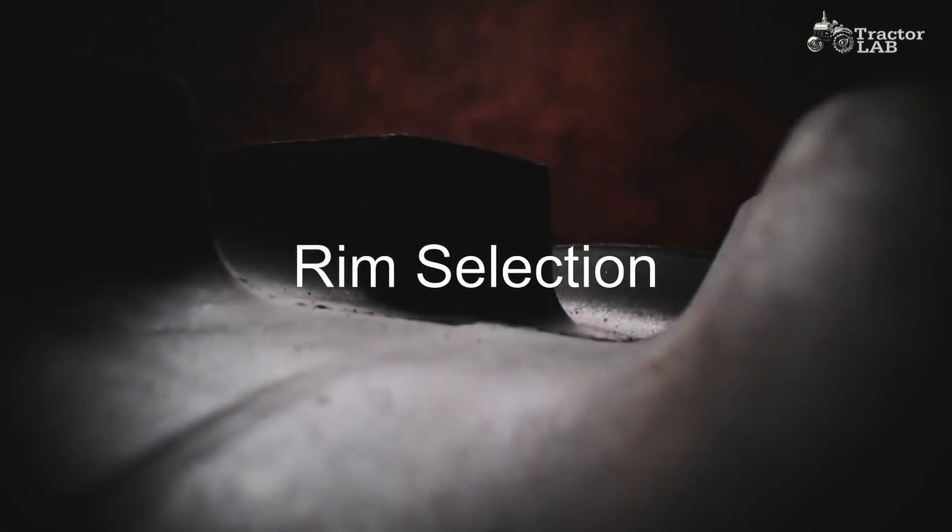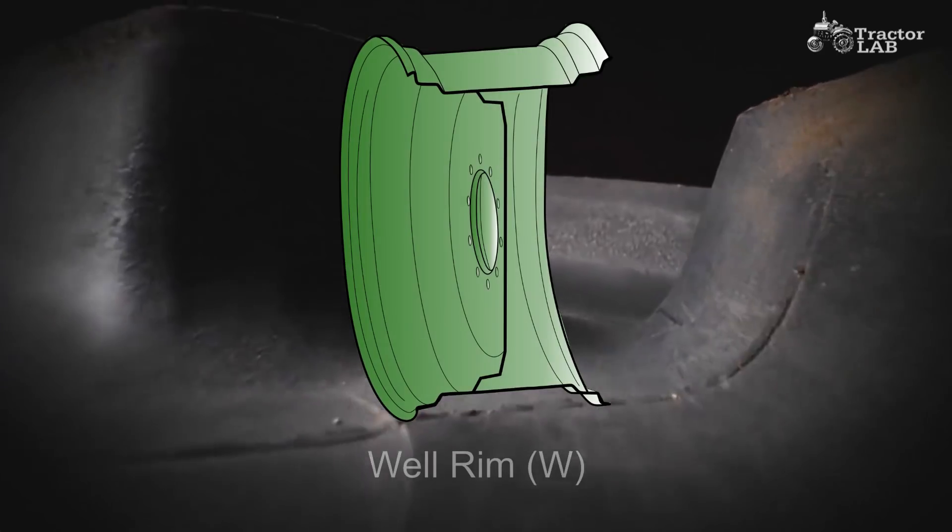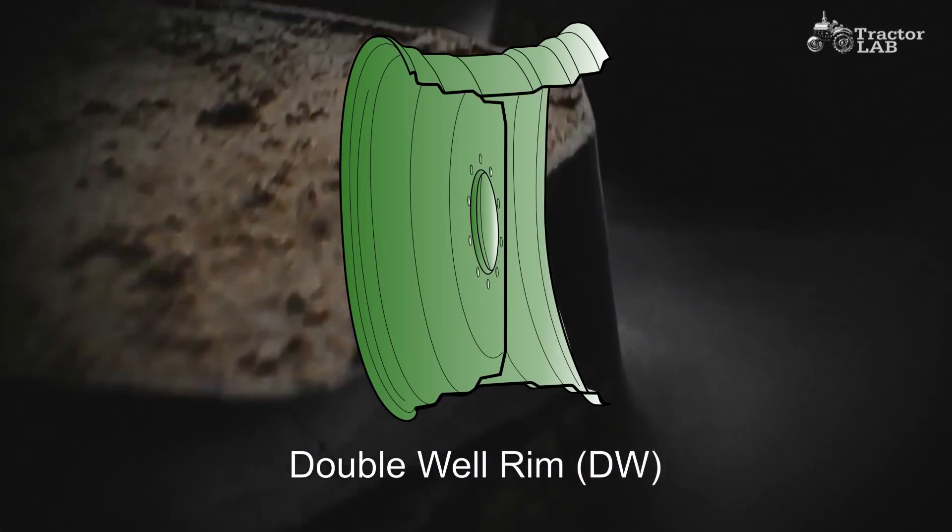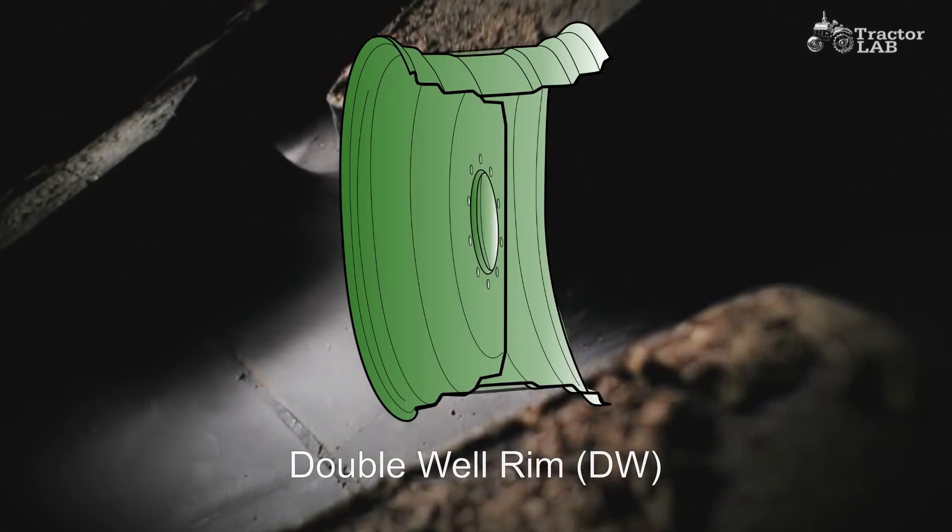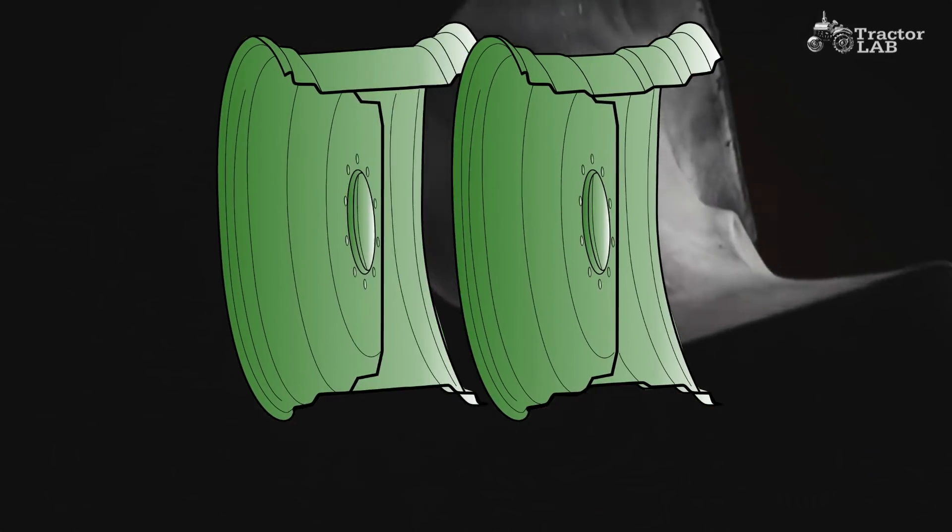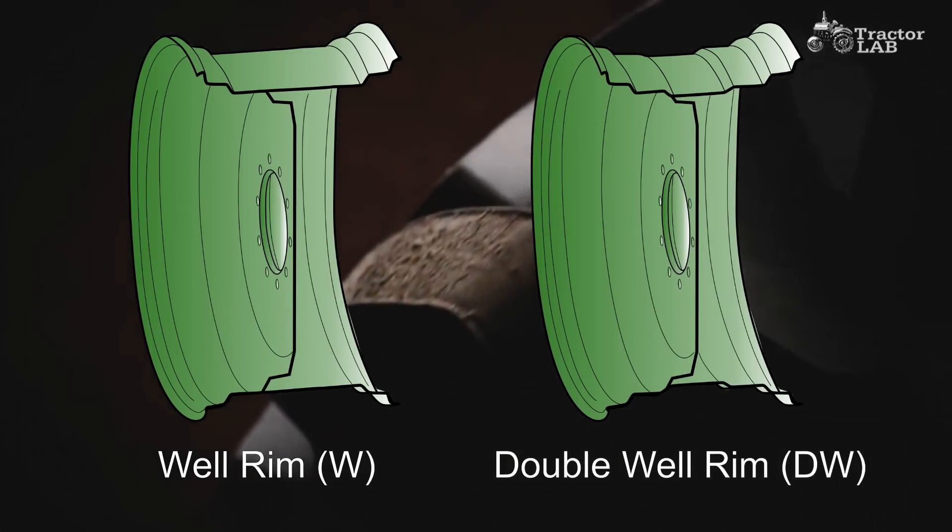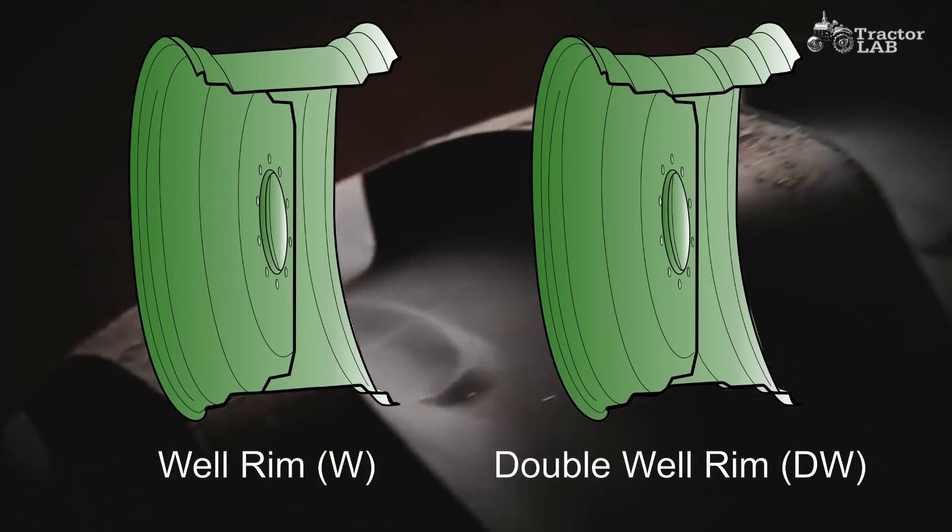Rim selection. It is important to always mount a tire on a rim that is approved for it. Not only must the width be correct, but also the flange contour must be the one recommended for the tire in question.